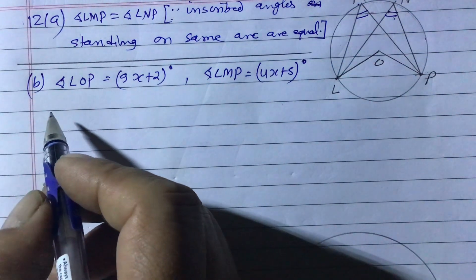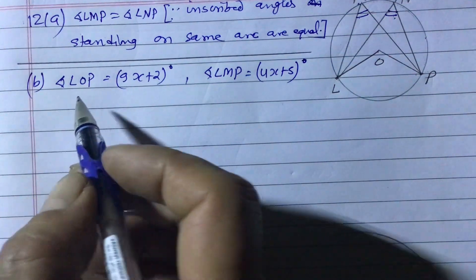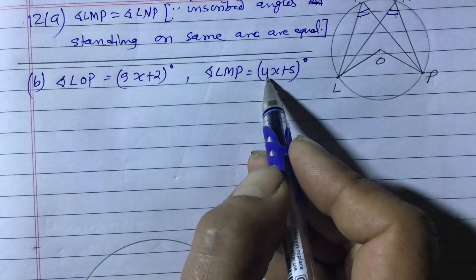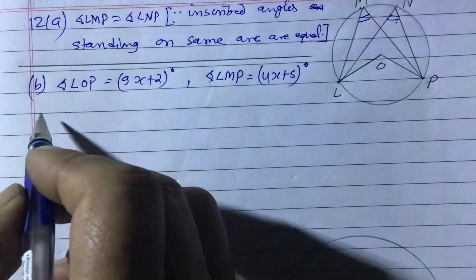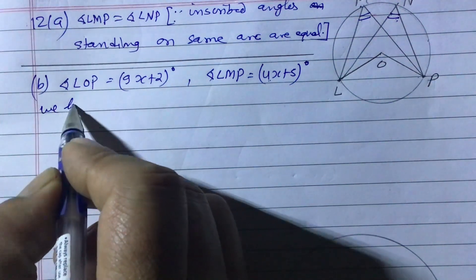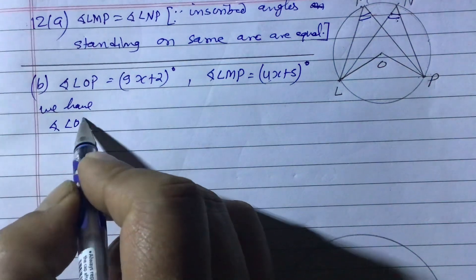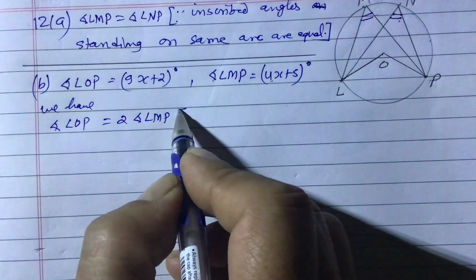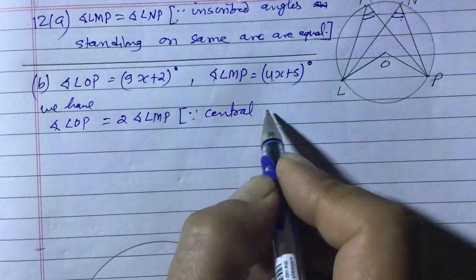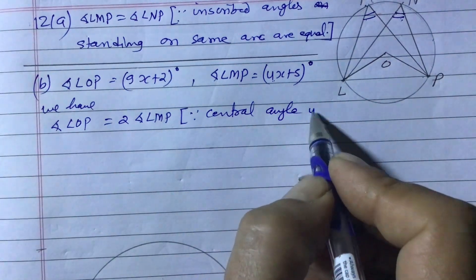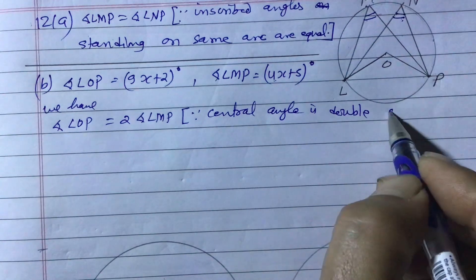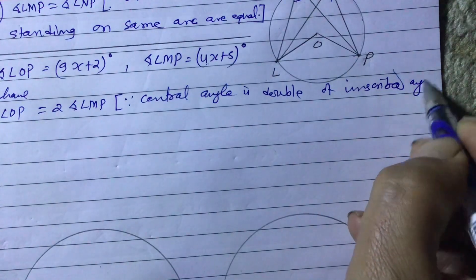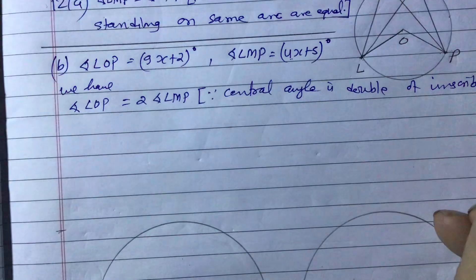The relationship between central angle and inscribed angle is that the central angle is 2 times the inscribed angle, or equivalently the inscribed angle is half of the central angle. So we write: angle LOP equals 2 times angle LMP. The reason is: the central angle is double the inscribed angle.